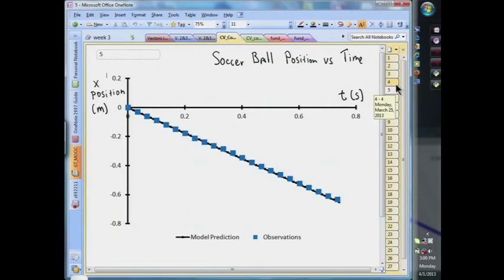Showing the comparison between the observations and predictions, where the observed positions at different times are shown in blue squares, and the predicted positions are shown by a black line.